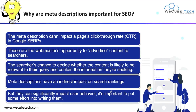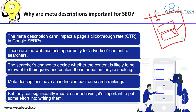Now, why are meta descriptions important for SEO? The meta description can impact a page's click-through rate on your Google search engine result page. On your SERP, you can see your website title and meta description. Meta description is the first descriptive content about your web page, and when users read this information, they get an idea of whatever content they can find on your web page. These are the webmaster's opportunity to advertise content to searchers.